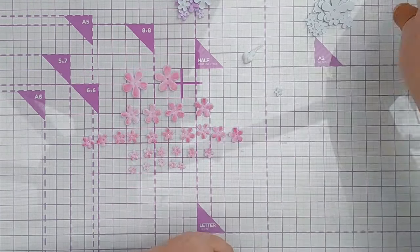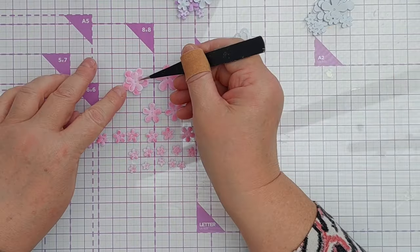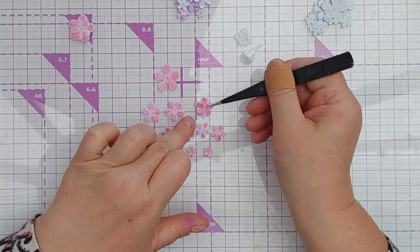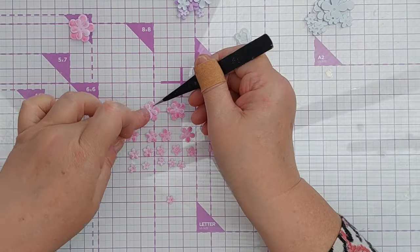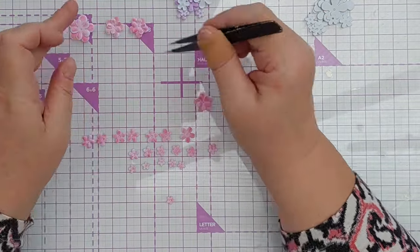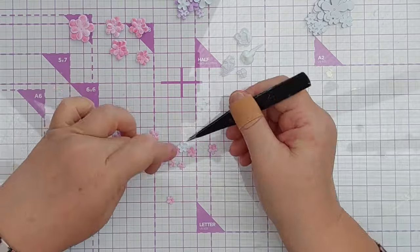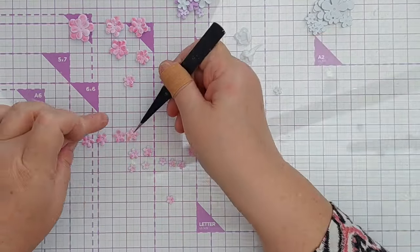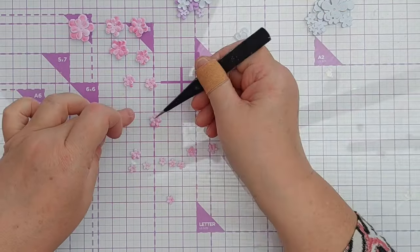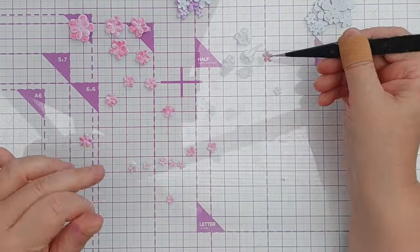So I sorted all my flowers out into size and then I stuck a smaller flower on top of a larger flower twisting the top flower so that the petals were offset. The very smallest flowers I left as single flowers and I did that with the pink ones and the purple ones but not the white ones and you'll see why in a bit.